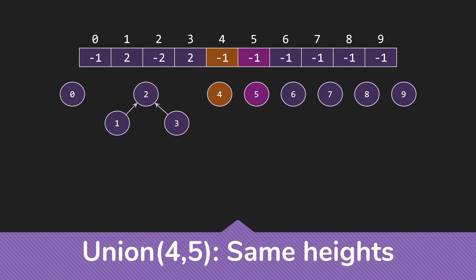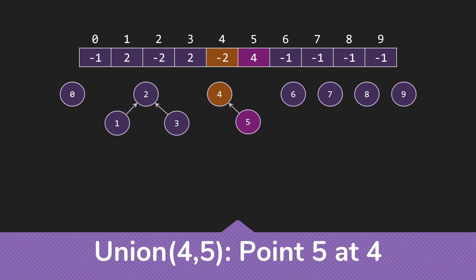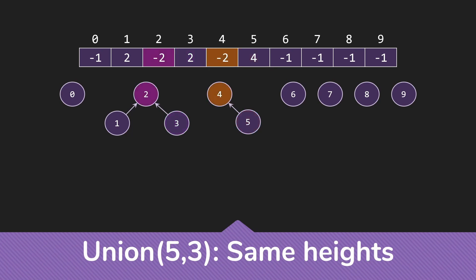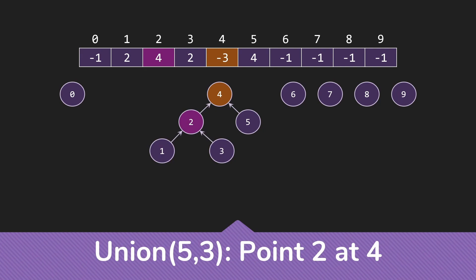Let me show how things can be a little different. I'll union 4 and 5: those are the same height, so we point 5 at 4 and increase the height of the tree. Then I union 5 and 3: we find the roots — climbing to 2 and 4 — and they have the same heights. So we use our arbitrary rule and point 2 at 4, increasing the height to 3. Notice this differs from union by size: one of these had more items than the other, so by size we would have pointed 4 at 2 — but with height, we point 2 at 4.